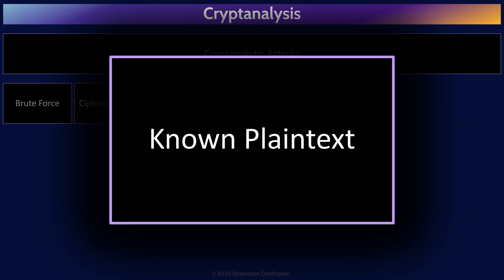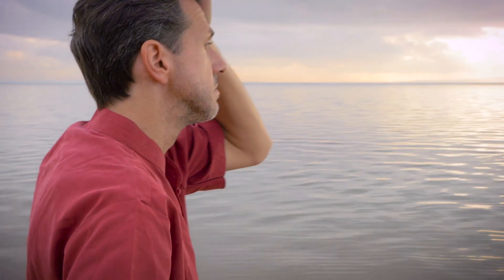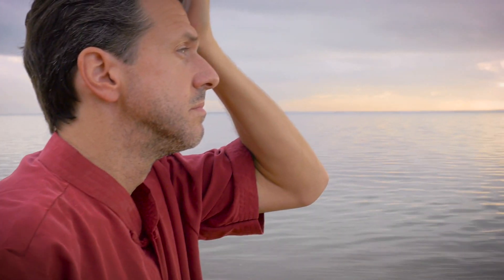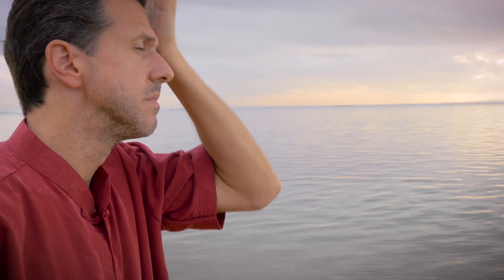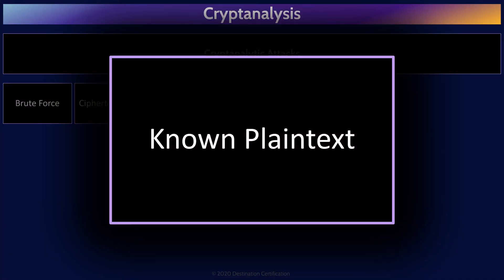Known plaintext attacks mean the attacker has access to both the ciphertext and the associated plaintext. So if the attacker knows the plaintext, then what are we doing here? Recall, the primary goal of cryptoanalytic attacks is to deduce the key. The attacker is using the plaintext and associated ciphertext to try and deduce the encryption key used. Once the attacker has the key, they can decrypt all other messages or even forge new messages.